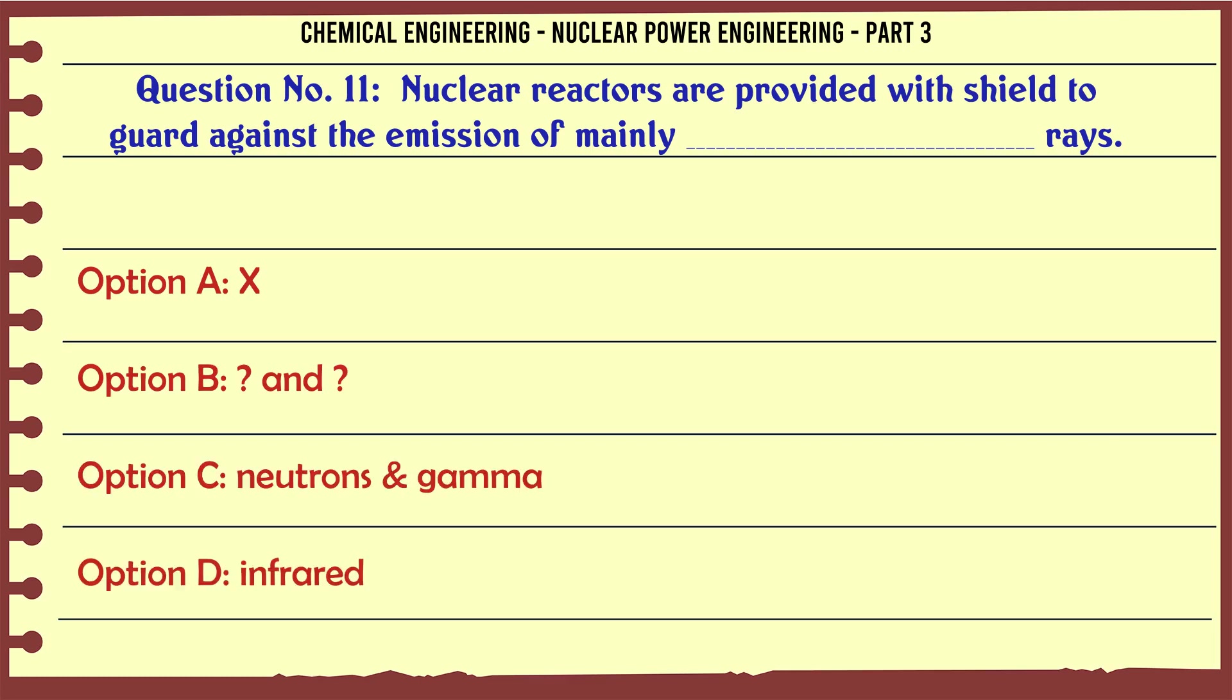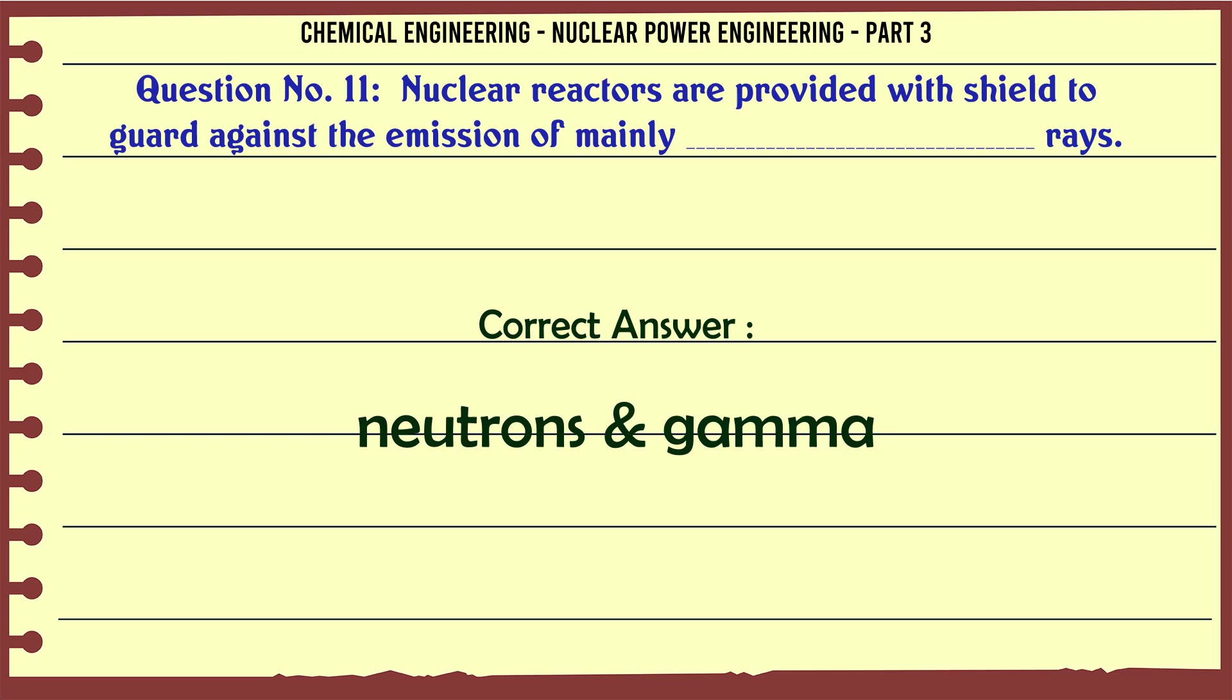Nuclear reactors are provided with shield to guard against the emission of mainly neutrons and gamma rays. The correct answer is neutrons gamma.